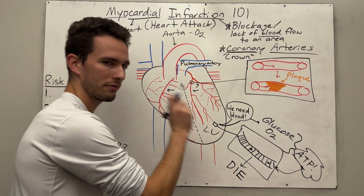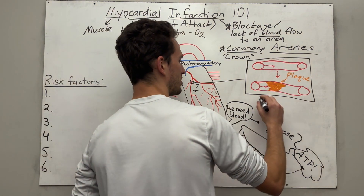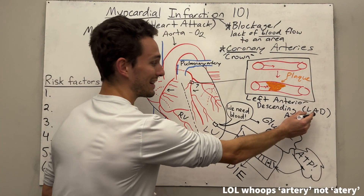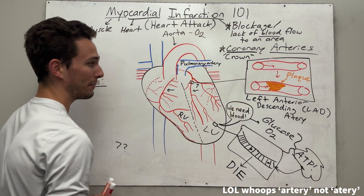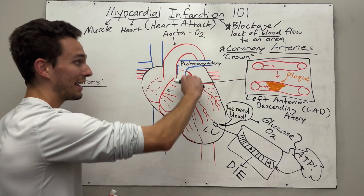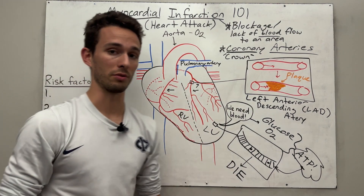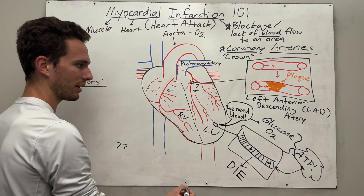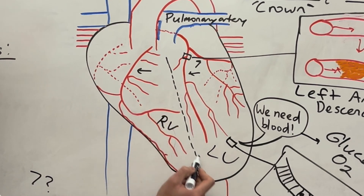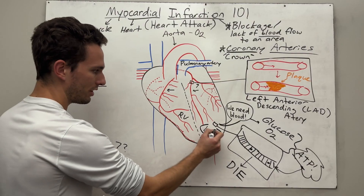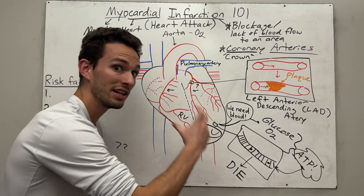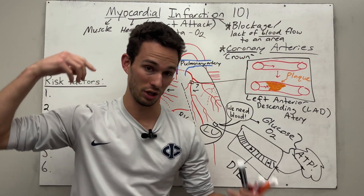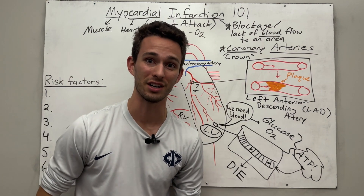I zoomed in specifically on a very important artery called the left anterior descending artery, otherwise known as the LAD. It's called that because it's descending on the left side of the heart anteriorly — on the front of the heart. This blood supply is directly feeding the left ventricle. The left ventricle's job is to pump blood to the entire body — including your brain, your organs, every part of your body except for the heart and the lungs.